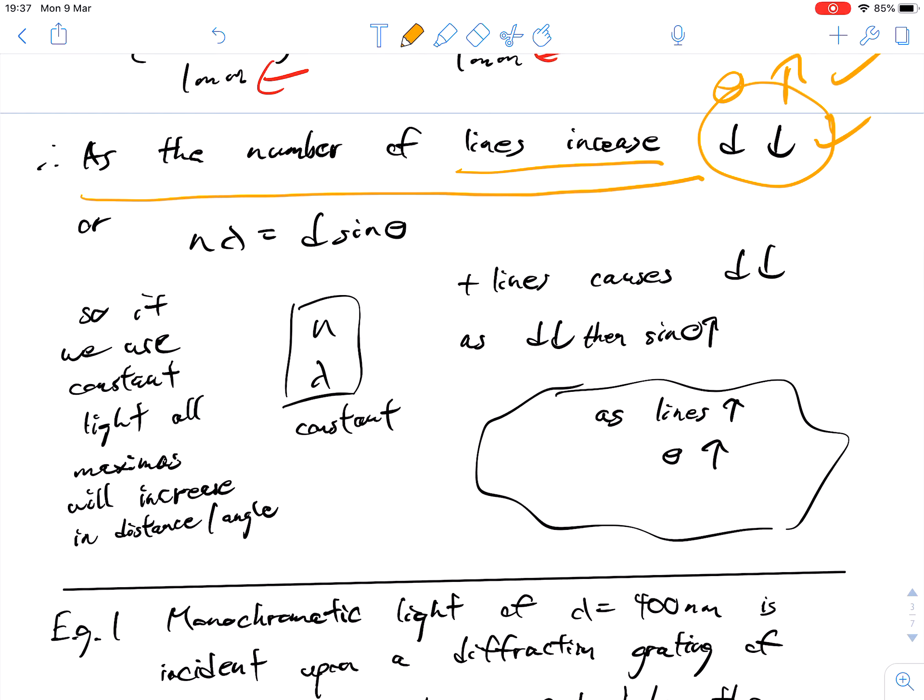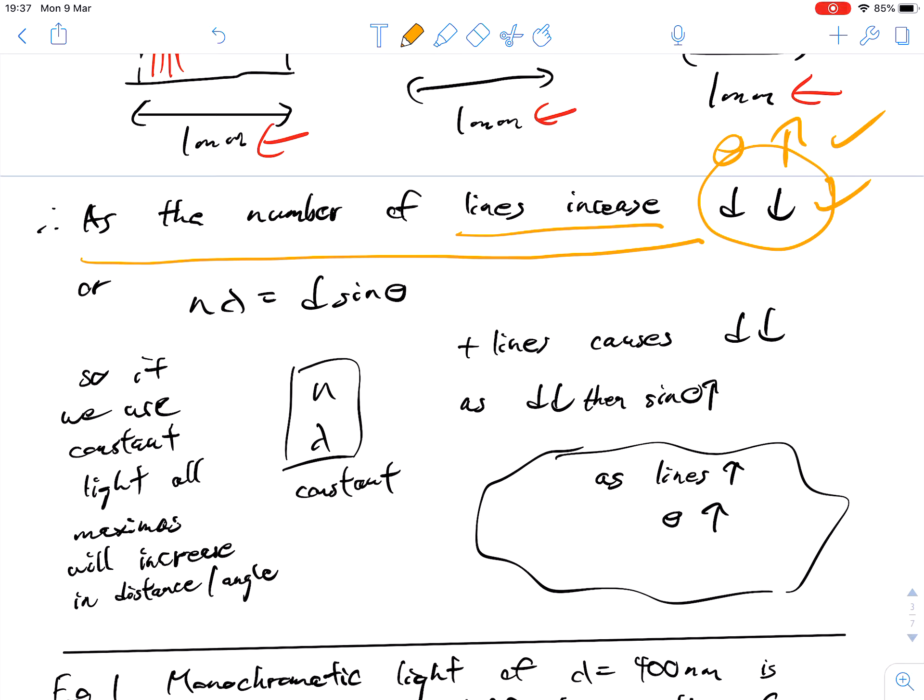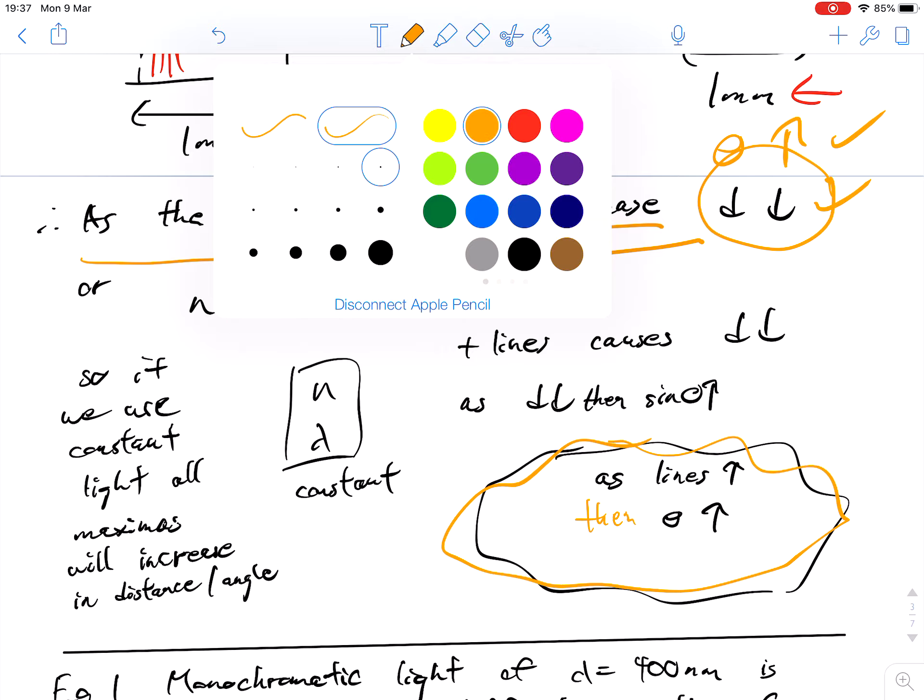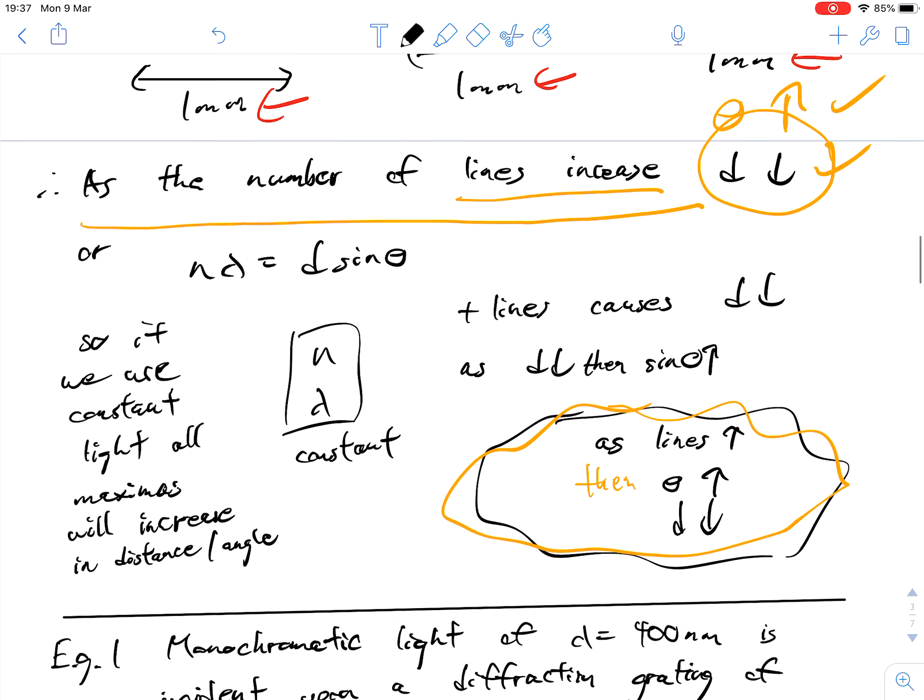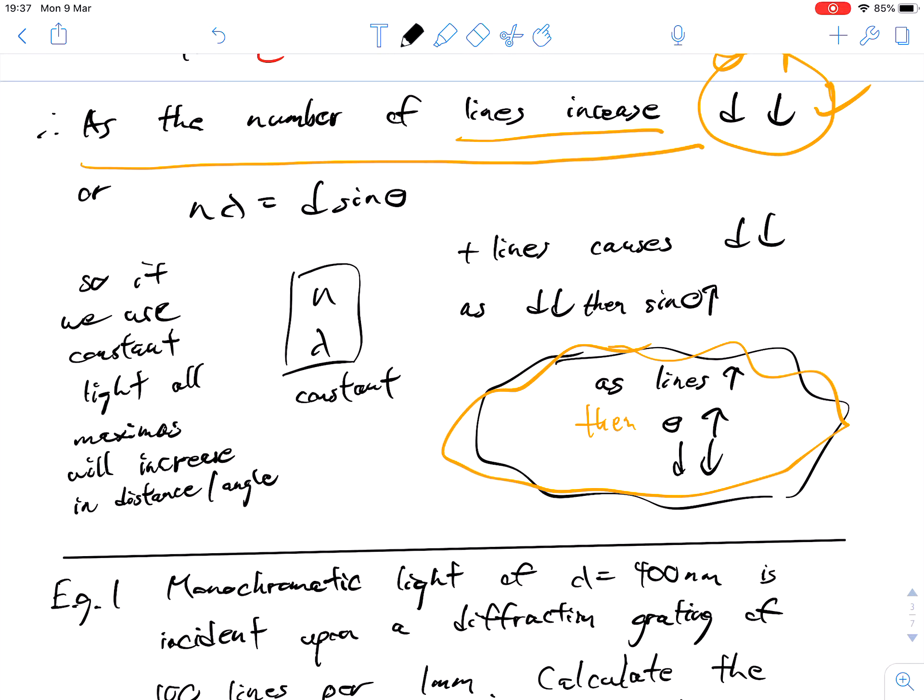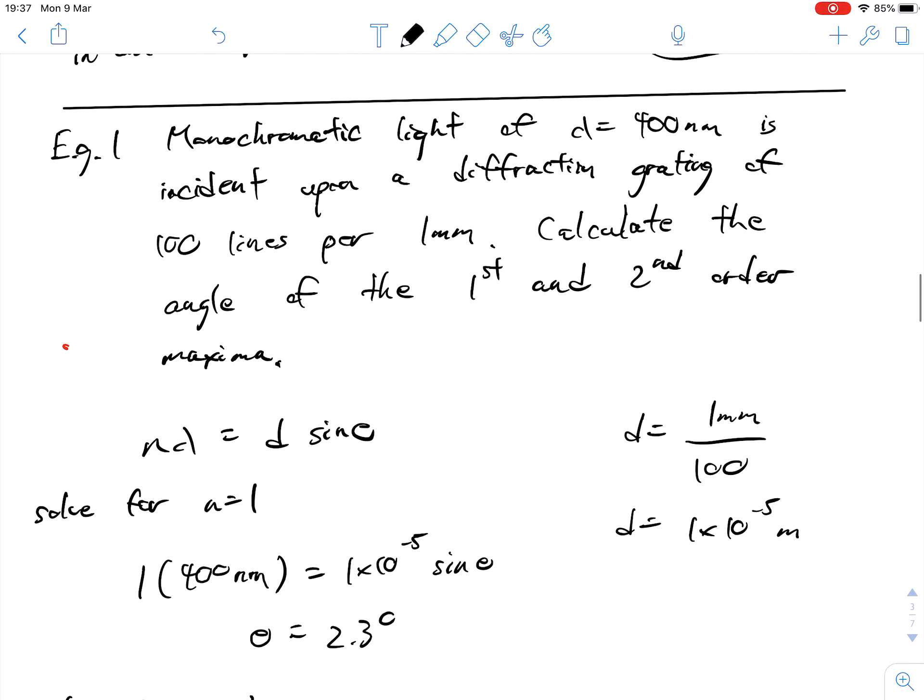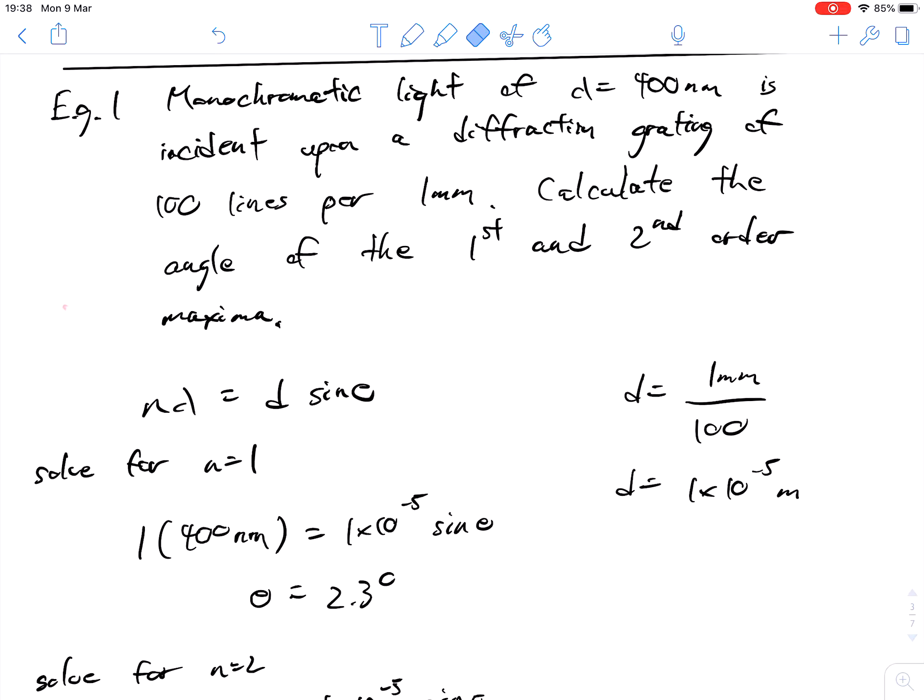This is mostly used for our diffraction grading calculations, so the two ideas are sort of combined together. Quick review of what we talked about last time: the two main relationships are as the number of lines increases, the angle theta also increases, and the separation also decreases. Let's look at some math to see how all of that works together.